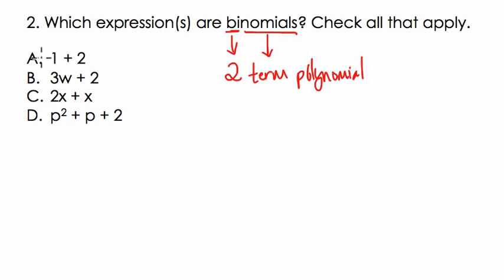The key is, in choice A, to add one plus two first before you count the terms. One plus two is just three. This is a monomial. It's a constant, one number.